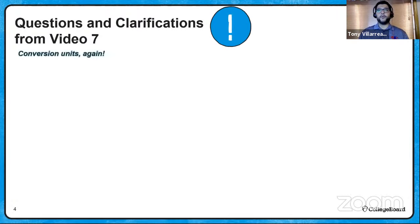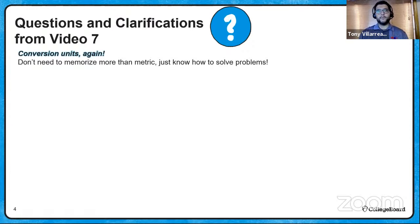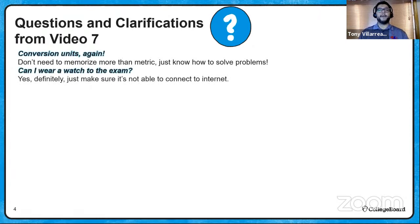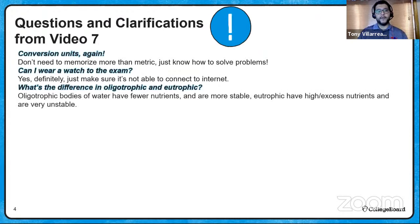A question that came up three or four times: you do not need to memorize anything beyond the metric system. You don't need to convert joules to watts to BTUs — just know how to convert within the metric system, such as kilojoules versus kilowatts. Regarding watches: yes, you can wear one, as long as it's not a smartwatch connected to the internet. On oligotrophic vs. eutrophic: oligotrophic bodies of water have fewer nutrients but are more stable; eutrophic have very high nutrients, tend to be unstable, and can lead to dead zones.